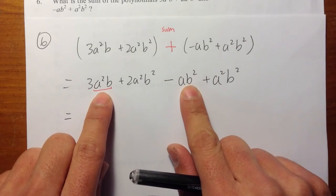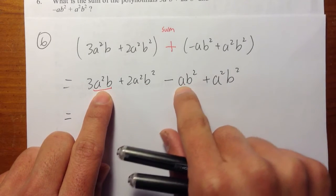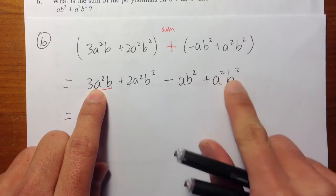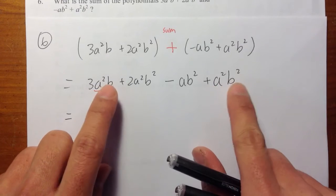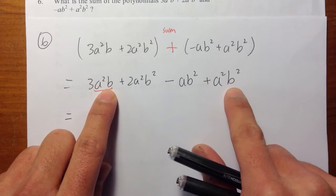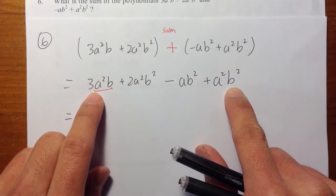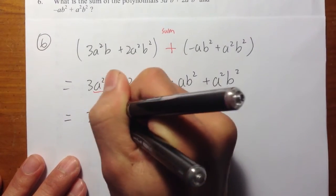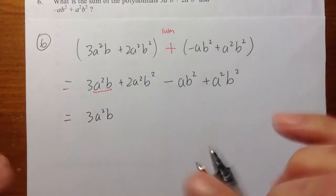Likewise, for these two, they are not like terms, because this one is a², but this one just has an a. This one is an a², but this is b, this is b². So this is only by itself. So let me copy that down. 3a²b. So this is a lonely term by itself.